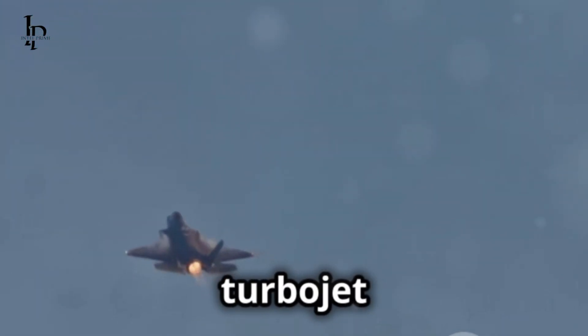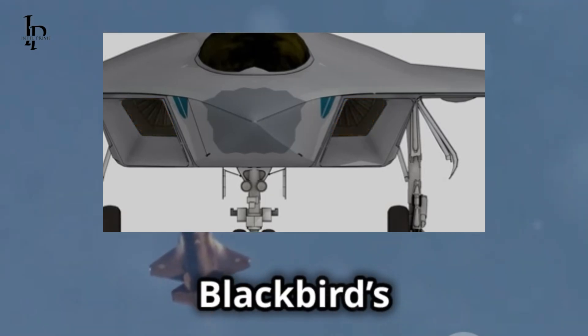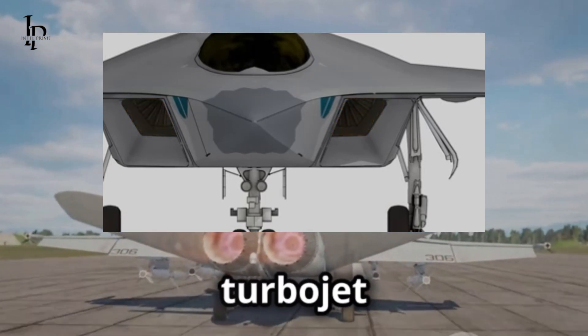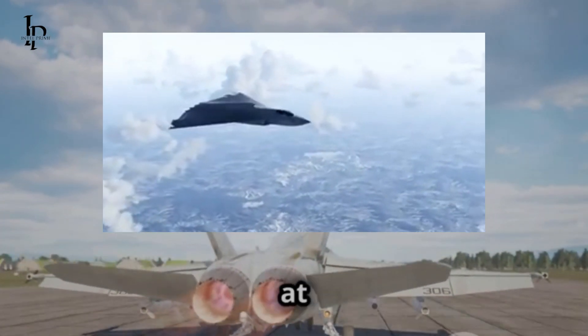China's high-speed turbojet engine features a dual-mode design, much like the Blackbird's J-58. This turbojet engine, equipped with an afterburner, provides increased thrust at high speeds.